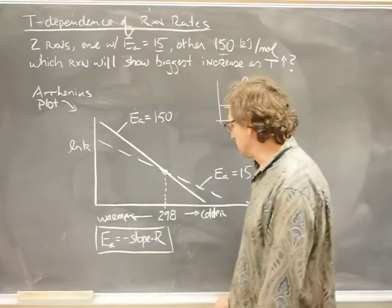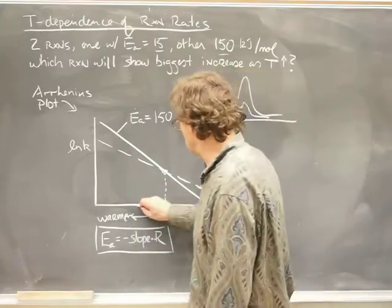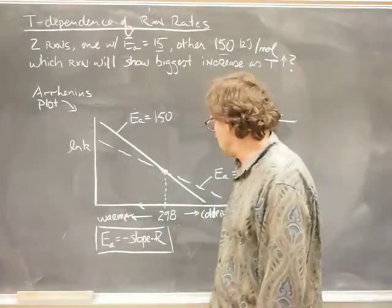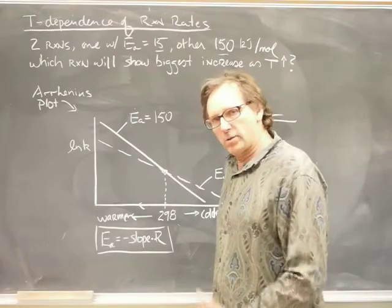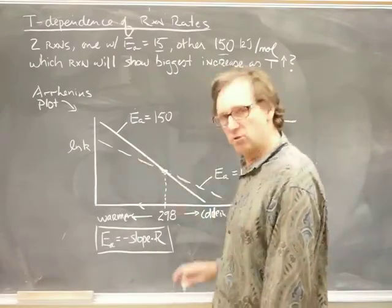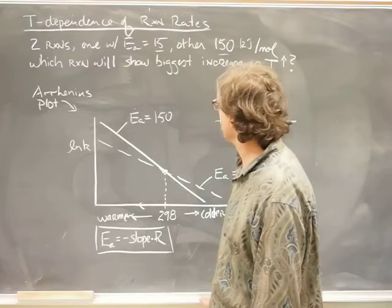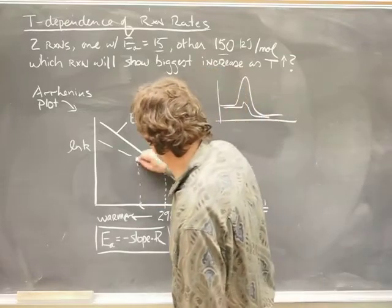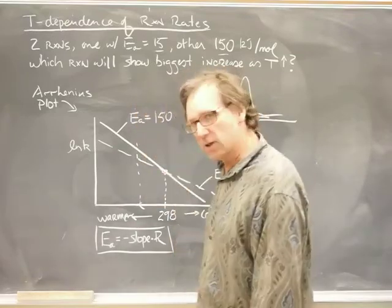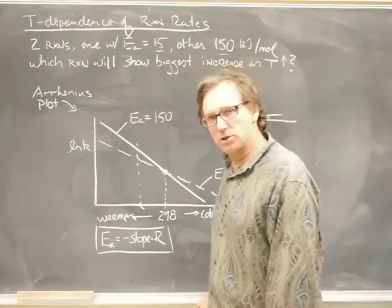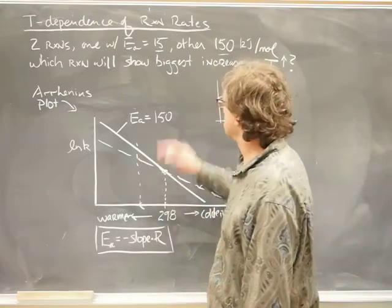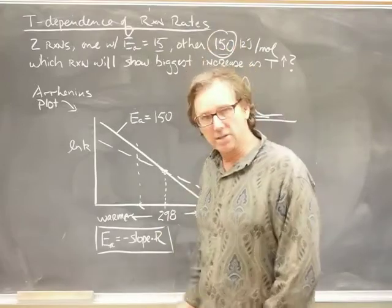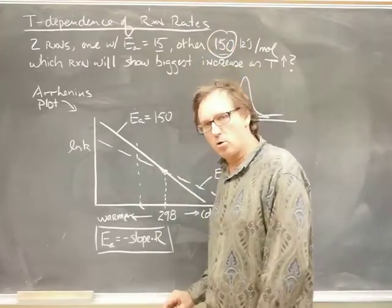So, now the question is, I'm going to go to the left here on this curve and the rate constants were the same at that reference temperature. And now, which reaction is experiencing the biggest increase in the rate constant? And it's obvious that it's the solid curve, it's the one with the larger energy of activation, experiences the biggest increase as the temperature goes up. So, our answer is, it's the reaction with 150 kilojoules per mole.